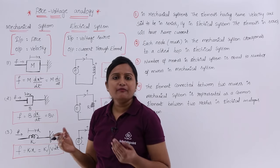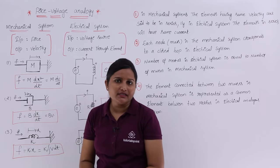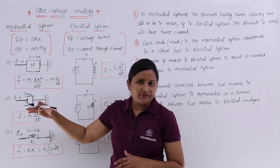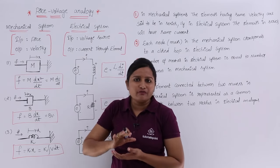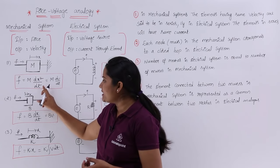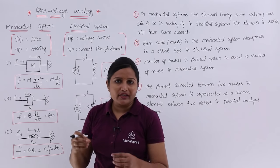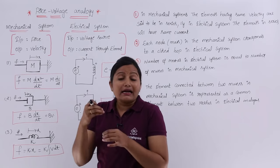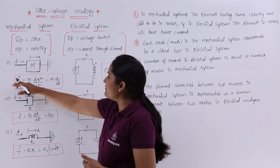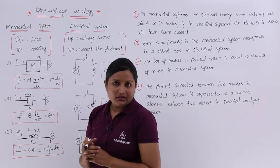Coming to mass — when we apply any force on that element, we get an opposing force from that body. The opposing force related to mass is equivalent to M·d²x/dt², where if displacement is x, then d²x/dt² is acceleration. So the force due to mass is proportional to acceleration, which is the double differentiation of displacement. Therefore, force equals M·d²x/dt².